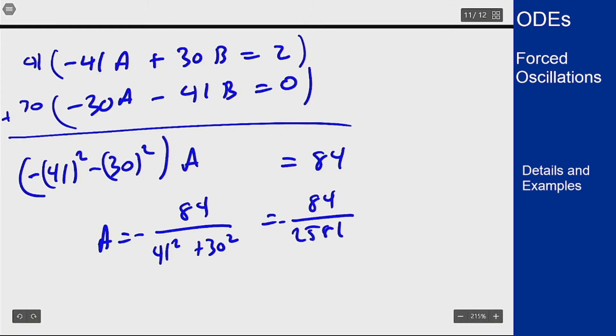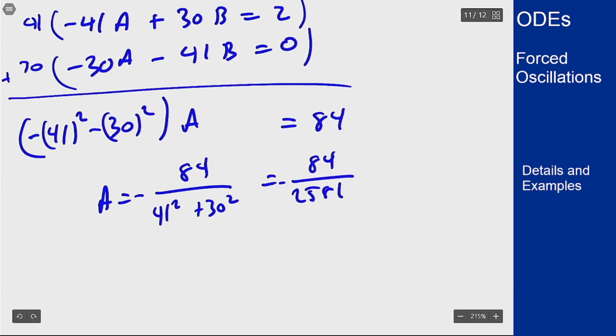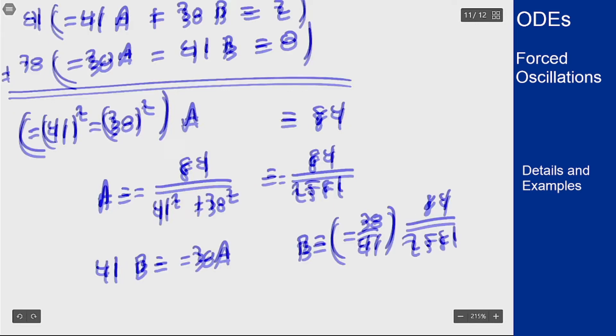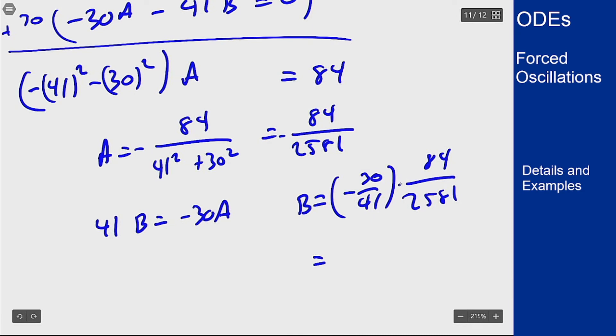The negative sign in the second equation tells us that 41B equals negative 30A, so B should be negative 30 over 41 times 84 over 2581, which is positive 60 over 2581.